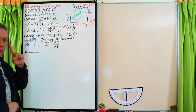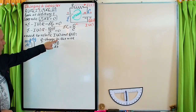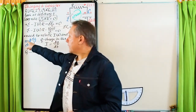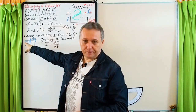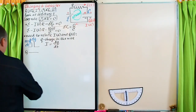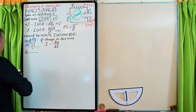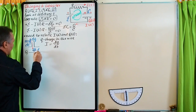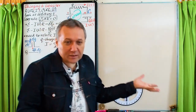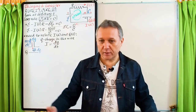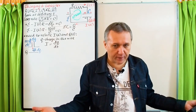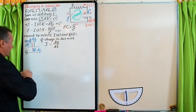A few moments later, the charge in the wire will arrive at the capacitor, so the charge in the capacitor increases. Simple logic: if the room had 100 people and five more arrived, the number goes up to 105. So Q_final equals Q_initial plus dq.